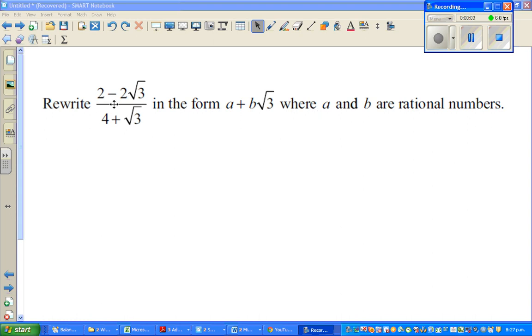We write 2 minus root 3 over 4 plus root 3 in the form of a plus b root 3, where a and b are rational numbers.